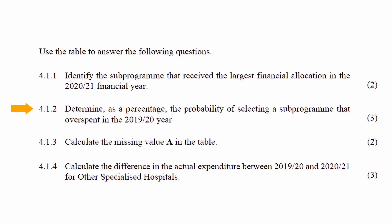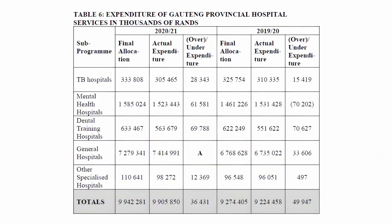In Question 4.1.2, you have to determine, as a percentage, the probability of selecting a sub-program that overspent in the 2019-2020 year.